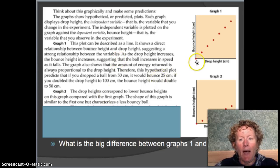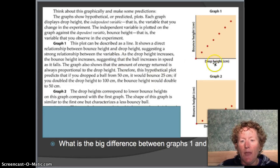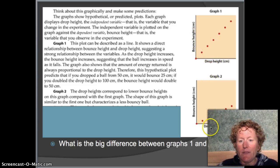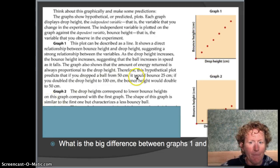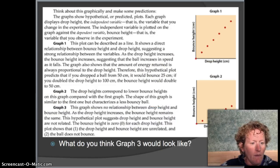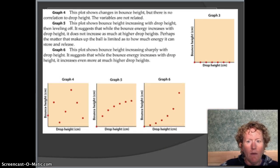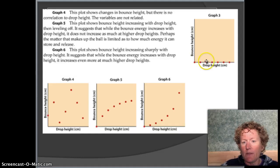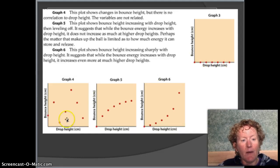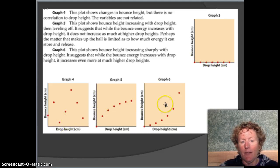We're looking at possible relationships between that drop height and that bounce height, and there are several different graphs that are within your lab. There's graph 1, graph 2, graph 3, where it's kind of a straight line across the bottom here, 4, 5, and 6.